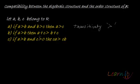And if A is greater than B and C is greater than 0, then when you multiply both sides, the order is maintained. And in case C is negative, then the order will change and AC will be less than BC — LHS will be less than RHS.